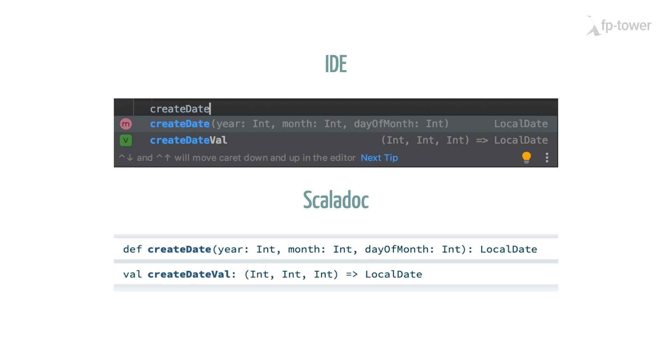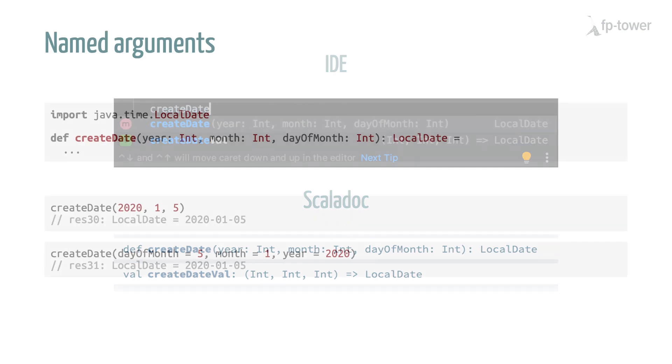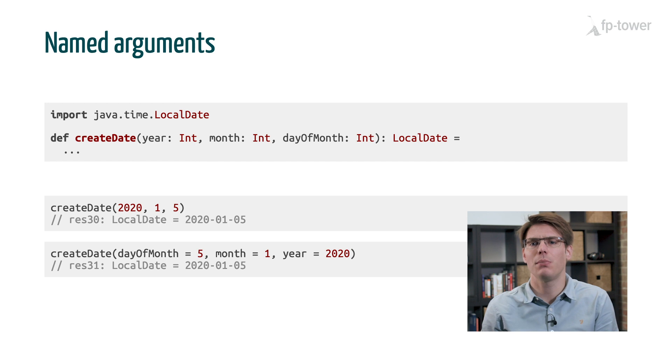However, for the val function, we only know it takes a triple of ints, and basically we have to figure it out how to order the year, the month, and the day.